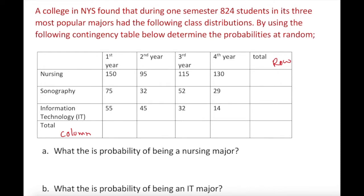Adding up the column totals: nursing gives 490, sonography gives 188, and IT gives 146. For the row totals by year: first year has 280 students, second year 170, third year 199, and fourth year 173. Adding all of these together gives a grand total of 824 students.